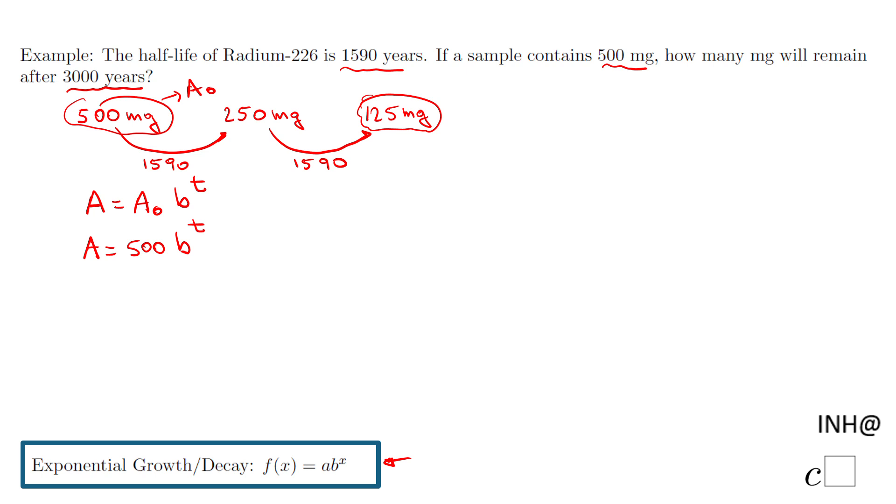For that reason we're going to use this idea of half-life. After 1590 years we have half of that 500, which is 250. So 250 equals 500 times b, and what is t? t is 1590.